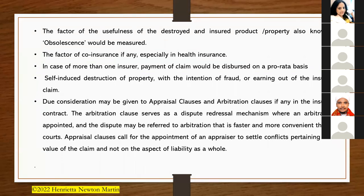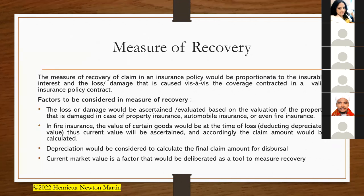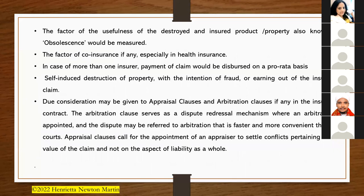Another factor is obsolescence — the usefulness or age of the destroyed insured property — which measures how old a product or property is. In the case of health insurance, co-insurance is also a factor: if another person is sharing the health insurance, the co-insurance arrangement would be considered when measuring recovery. For property claims, depreciation and obsolescence are calculated; for health insurance, co-insurance is calculated.